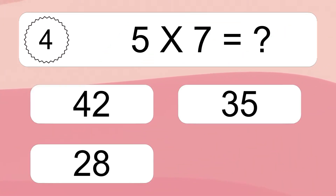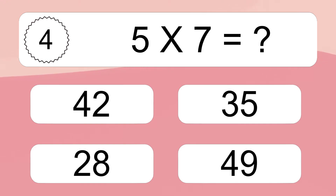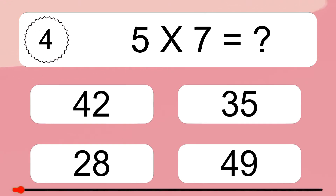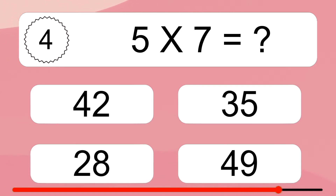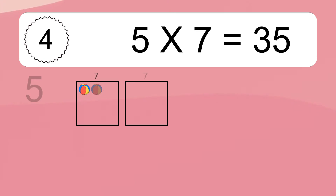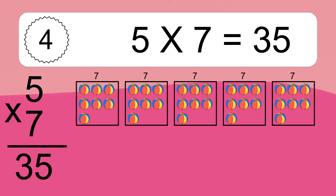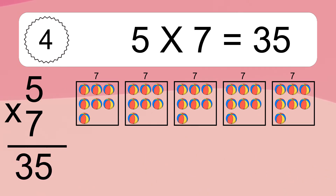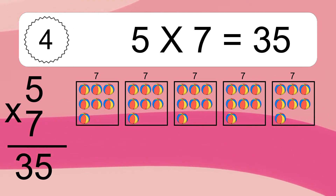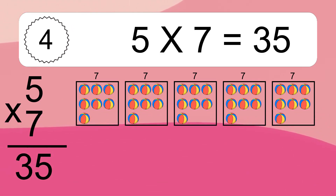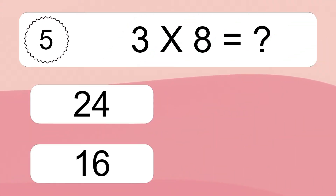5 times 7 equals what? We have 5 boxes and each box has 7 colorful balls inside. If you count all the balls in all the boxes together, you will have 5 times 7 balls. This equals 35 balls.